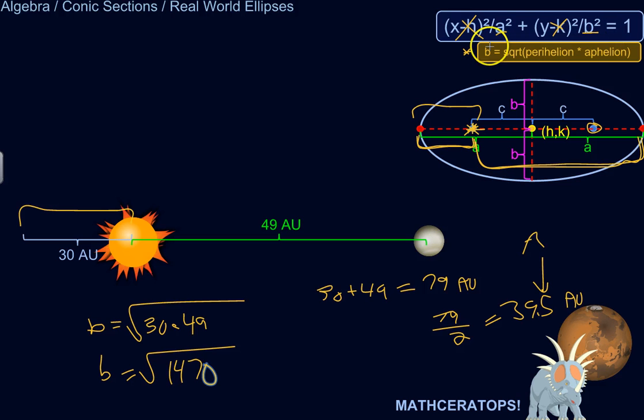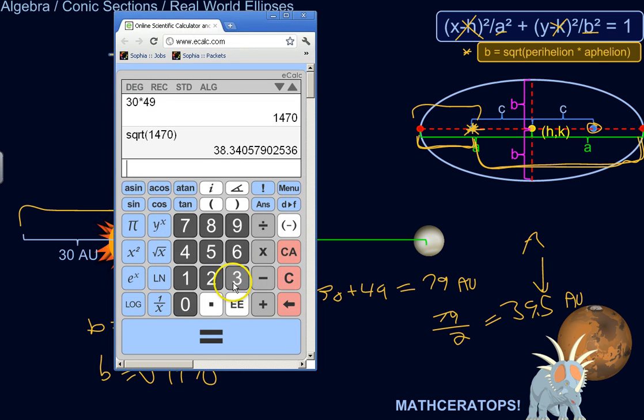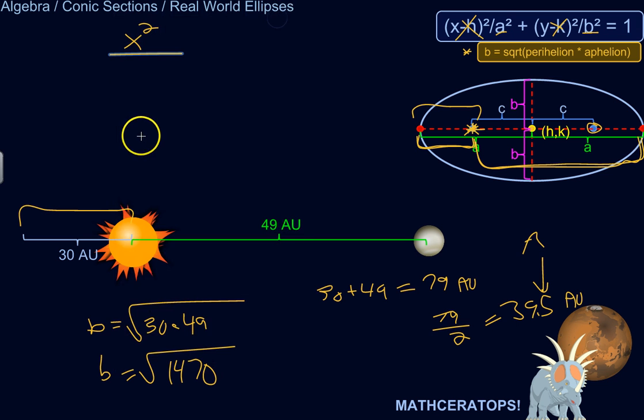So yeah, that's it. So let's write our equation. So we've got X squared over A squared. So 39.5. Let's square that. Squared. It's about 1560. Let's call it 1560. Plus Y squared over 1470.